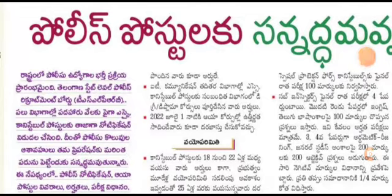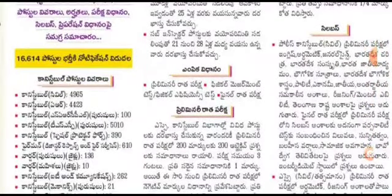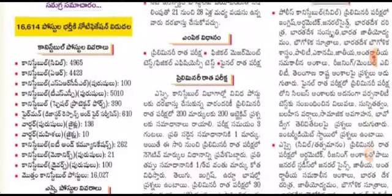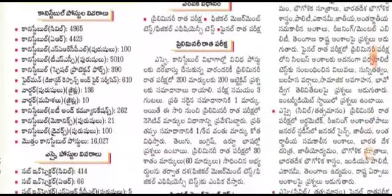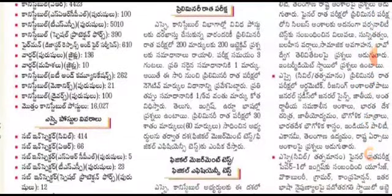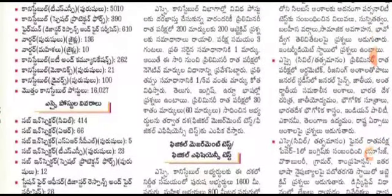Let's start with the 1st S.I. Carni Stable. The first step is 16614 vacancies. The 1st S.I. Carni Stable is cleared. The sub-inspector civil AR area is cleared. There are also the Prelimits, Mains, and Physical Events.